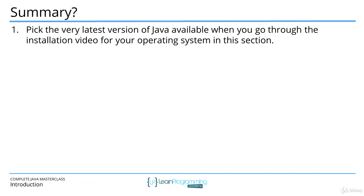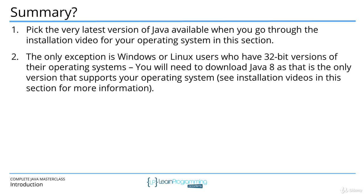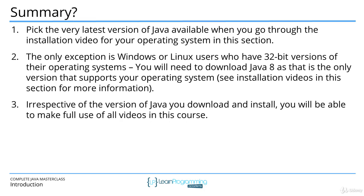In summary, pick the very latest version of Java that's available when you get to the download page, and refer to the installation videos in this section for more details. The only exception is Windows and Linux users with a 32-bit operating system — you'll need to download Java 8 only. But again, refer to your installation videos for more details. Irrespective of the version you install, you'll still be able to make full use of all videos in this course.